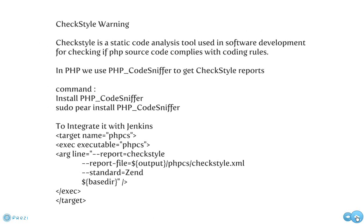This is Check Style warning. Check Style is a static code analysis tool used in software development for checking if the PHP source code complies with the coding rules — basically it checks whether the developer is following the coding rules. In PHP, what we use is PHP Code Sniffer, which generates the Check Style report. Code Sniffer is a tool which is part of PEAR. When you install with PEAR you can install Code Sniffer, and it tells you what mistakes you have made in the code. This is how you integrate it with Jenkins.